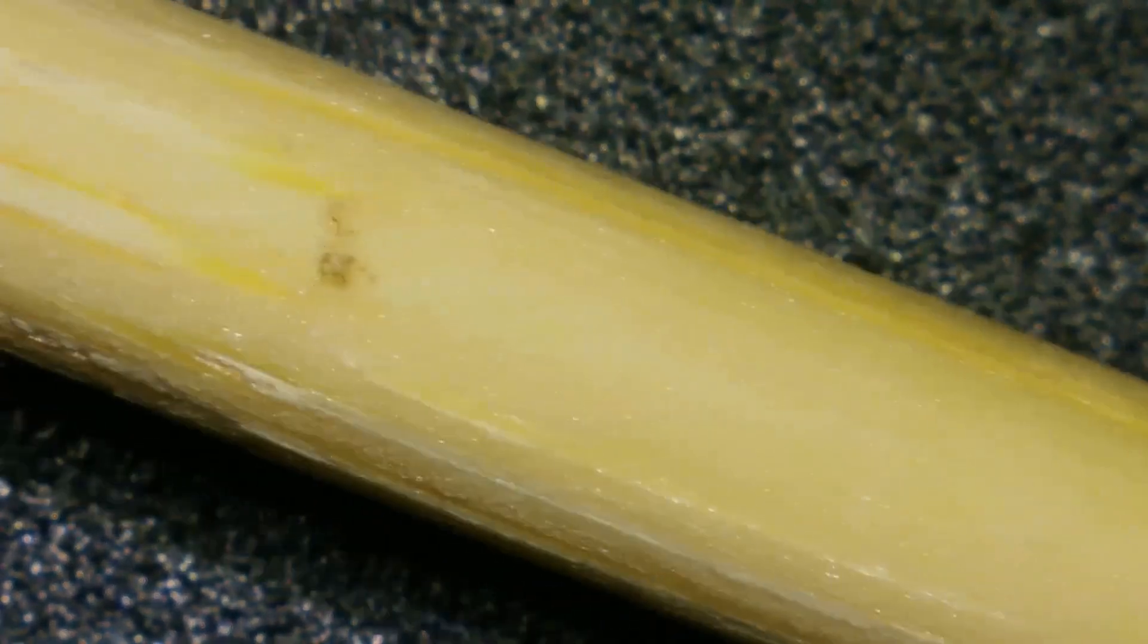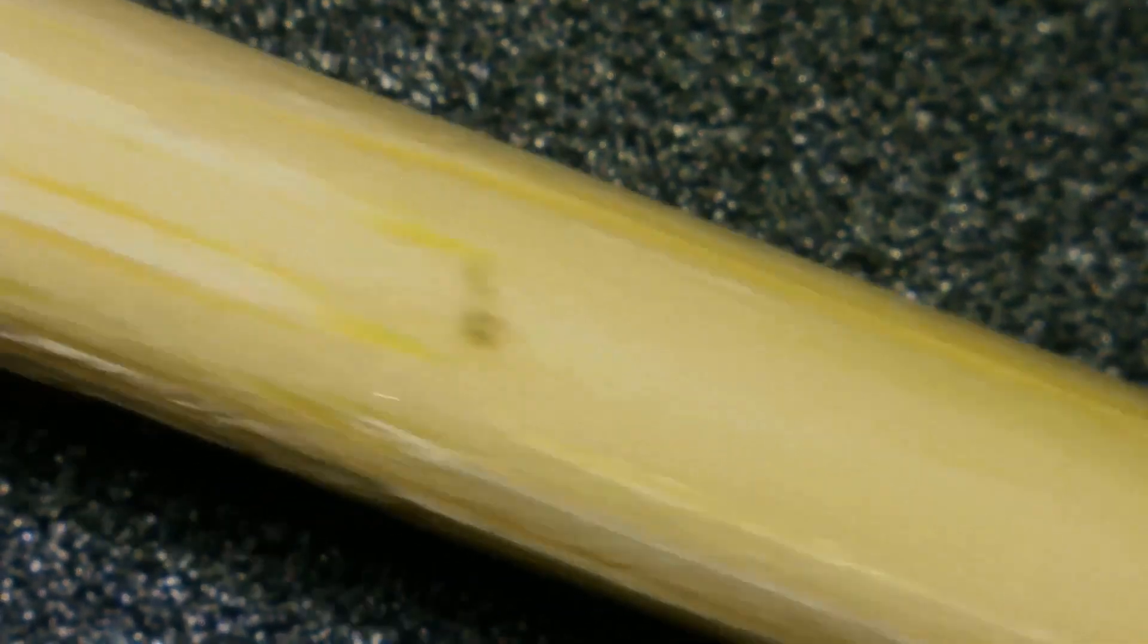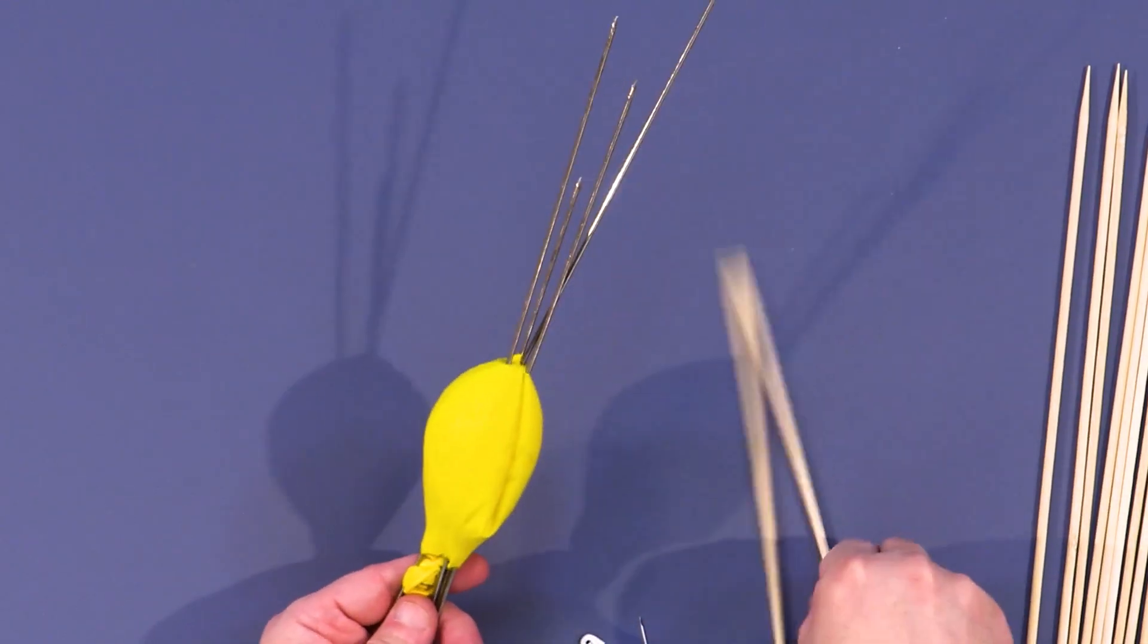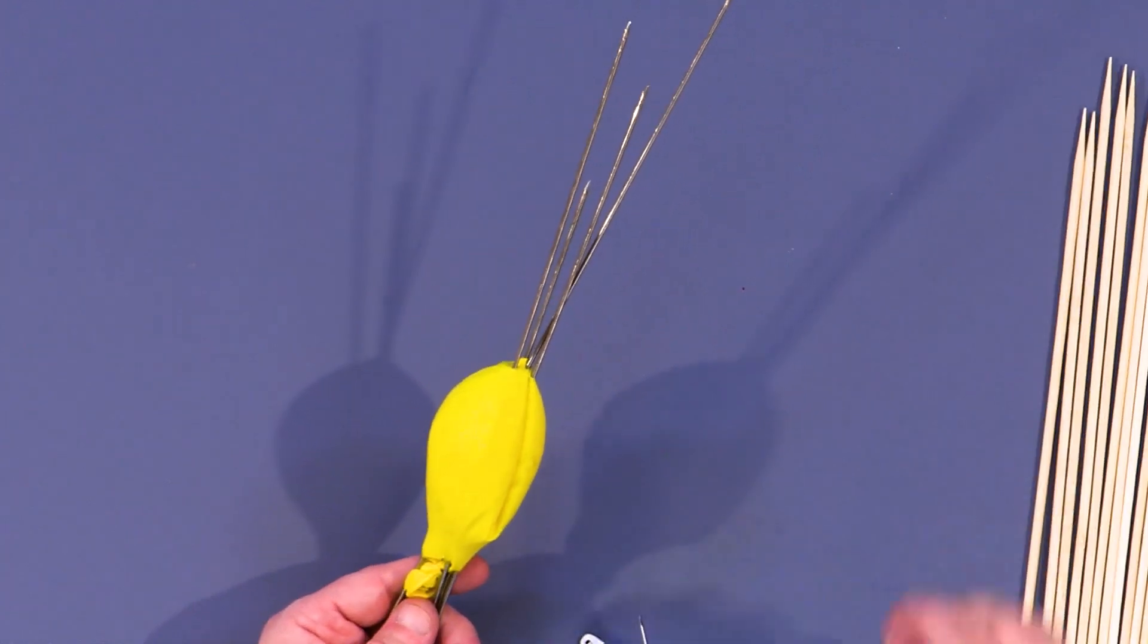When you look at this wood here, even the smoothest wood to your touch is very, very rough under a microscope. There's all kinds of dips and valleys and splinters and all kinds of things. So let's see if we can do this with the wood and see how difficult that is. And then we'll move on to actually shooting an arrow through the balloons.